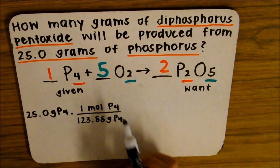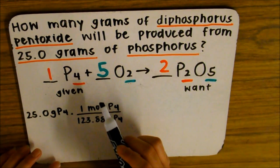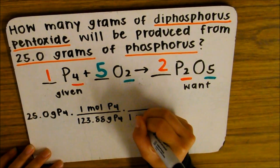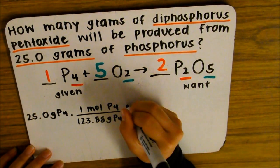Now we're going to the mole-mole bridge. We're going to put the mole of phosphorus on the bottom, and we're going to put the mole of diphosphorus pentoxide on the top because that's what we want.